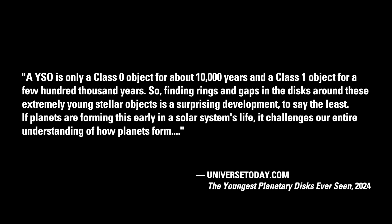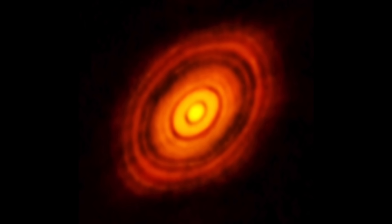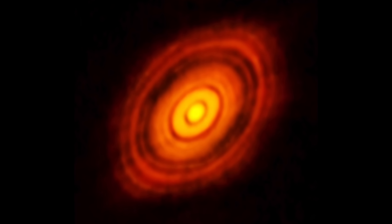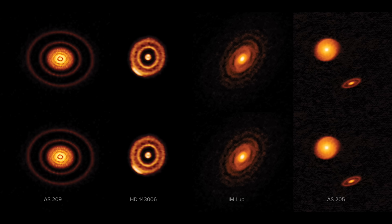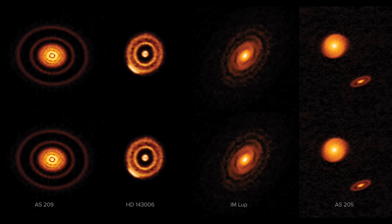Finding rings and gaps in the disks around these extremely young stellar objects is a surprising development, to say the least. If planets are forming this early in a solar system's life, it challenges our entire understanding of how planets form. Dr. Hsieh acknowledges that the rings and gaps observed in these disks may not actually represent planets, but in standard theory might be caused by instabilities such as gravitational perturbations.